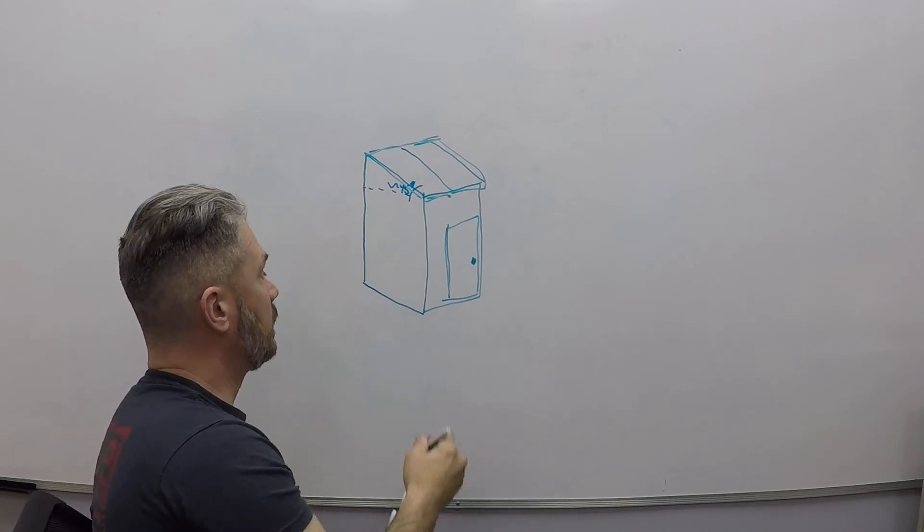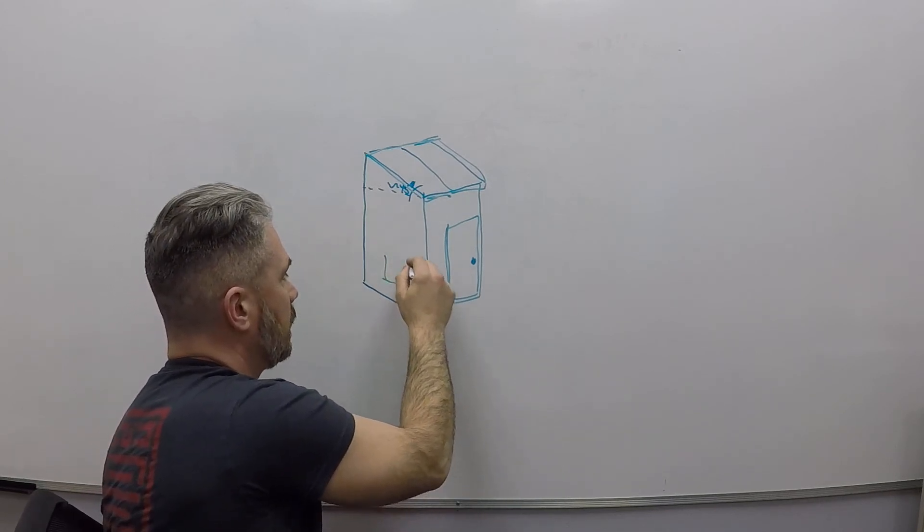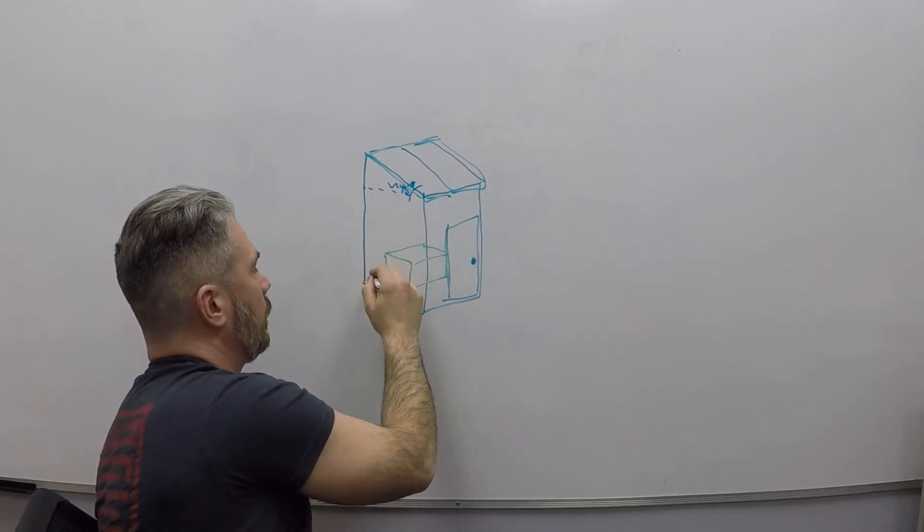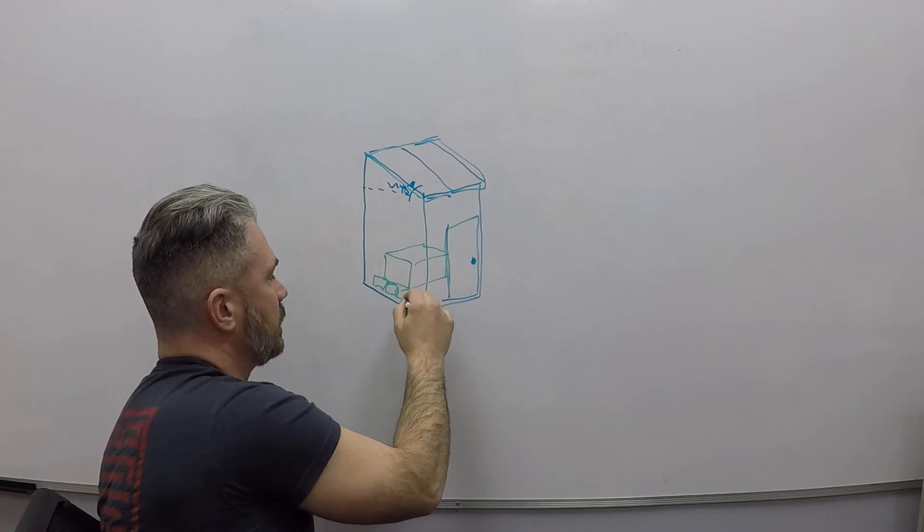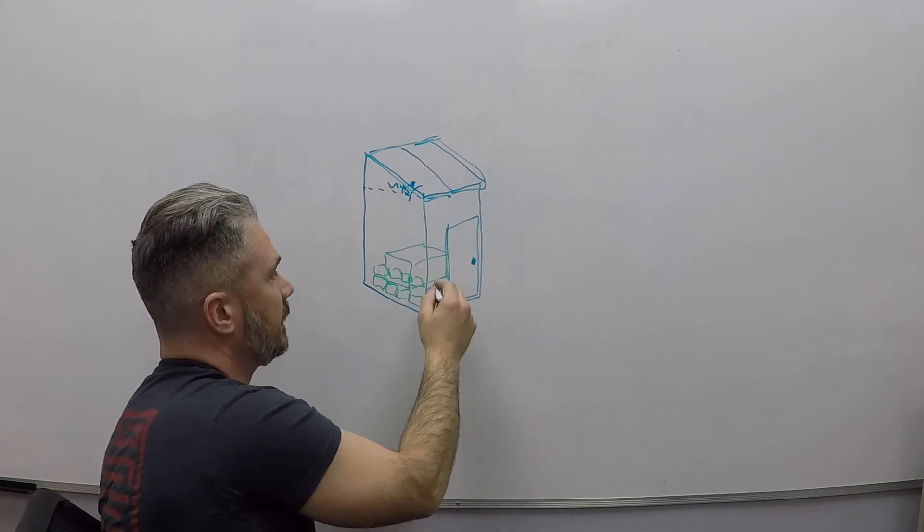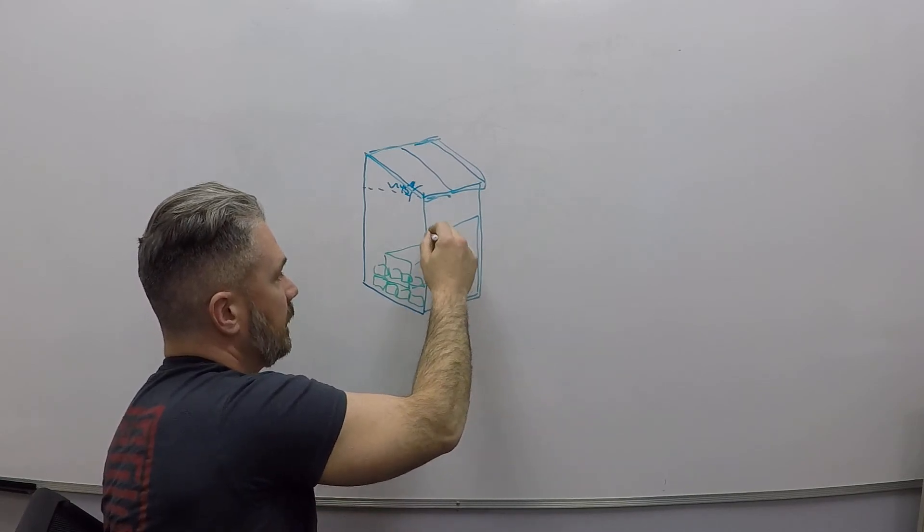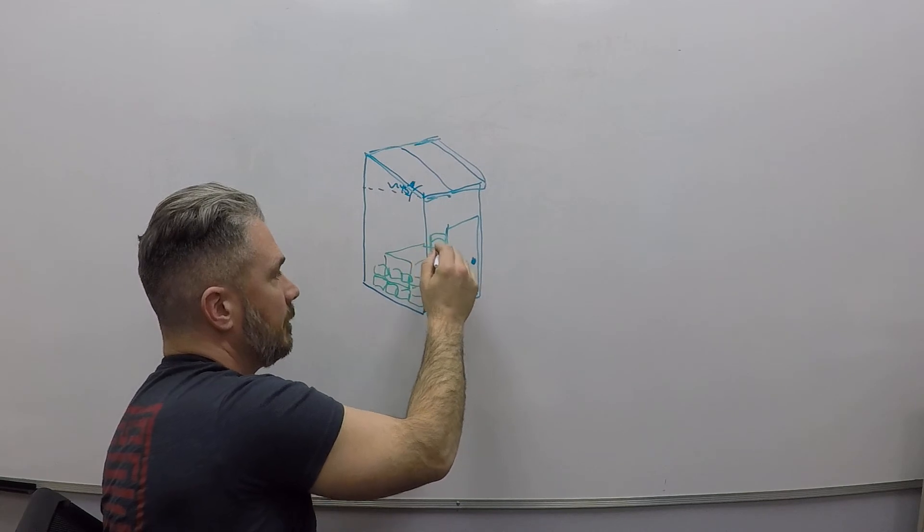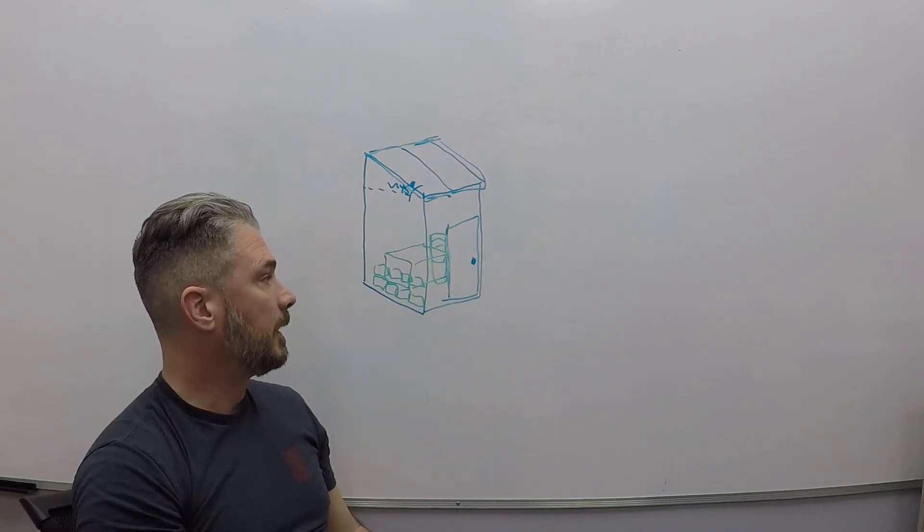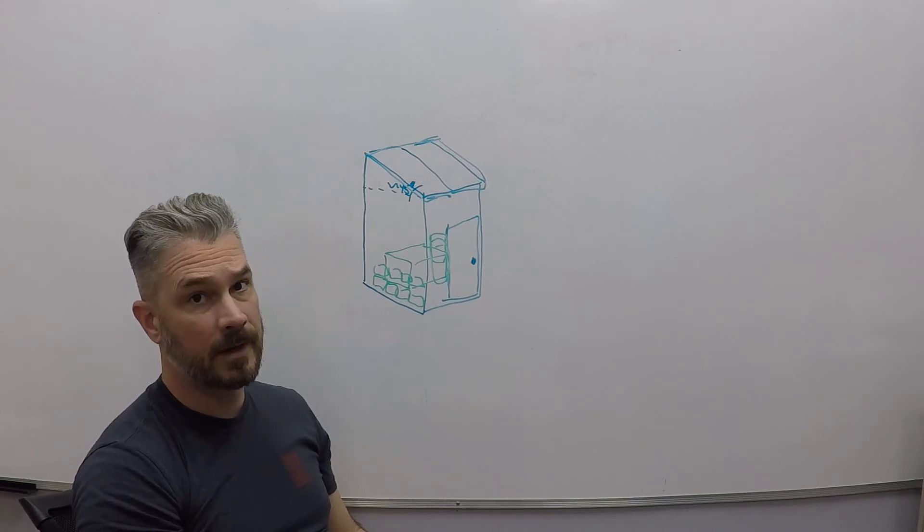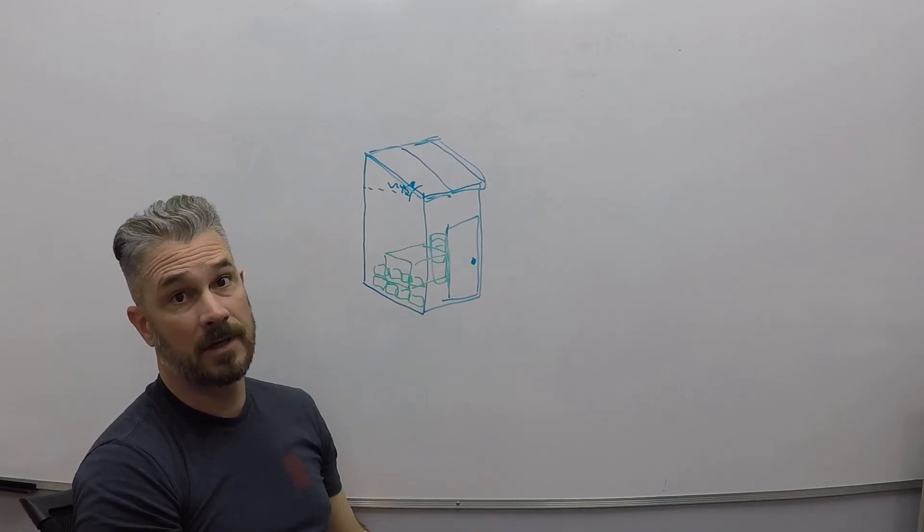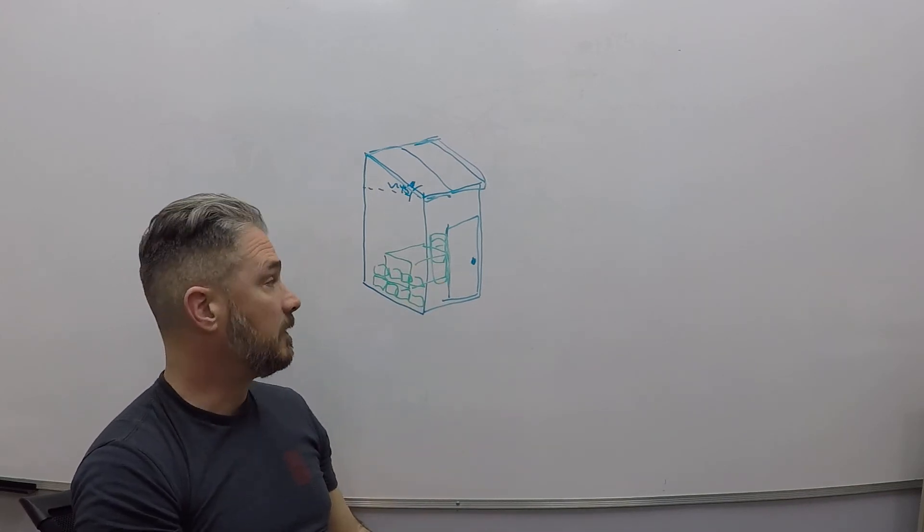On the inside we'll park our generator cabinet. We'll have our four batteries along this wall, with an additional four batteries installed above them. On the front wall here we'll have the inverter, the charge controller, and a load center so that I can hit switches individually, isolating certain items so they can be serviced.